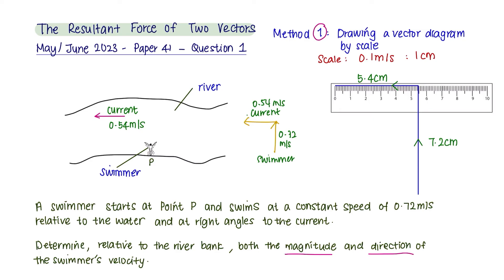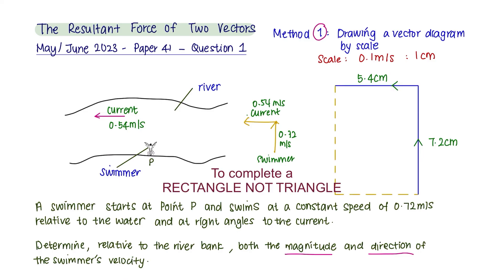And next, for the current 0.54 meters per second, your length of vector would be 5.4 centimeters like this. The next step here would be to complete the triangle. Make sure everything is at right angle and draw a diagonal length from corner to corner and you will get your resultant force like this.